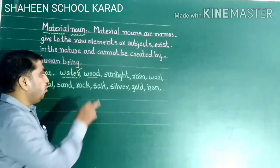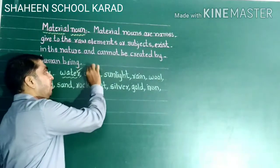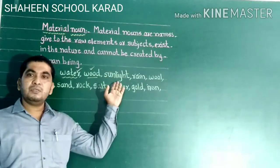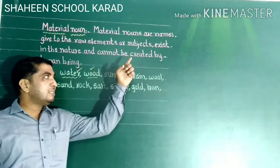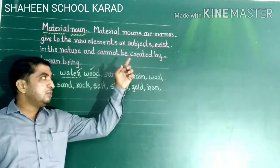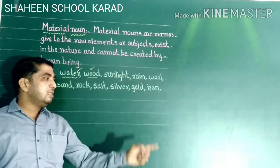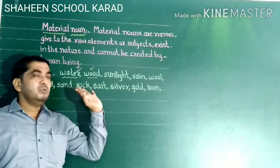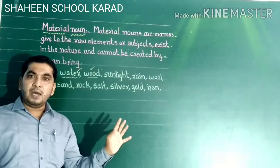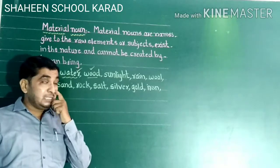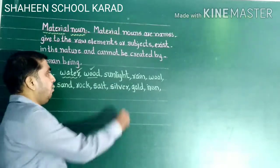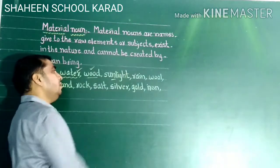Sunlight is another example of a material noun. What is sunlight? It is a material noun — it comes from nature and exists naturally around us.